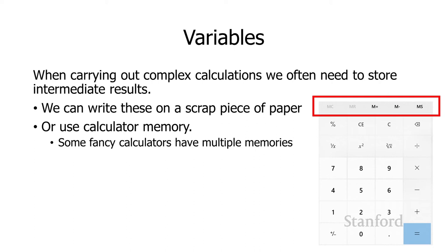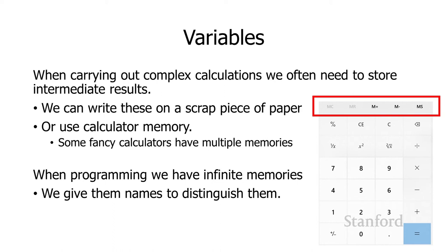In programming, when we're writing programs for the computer, we have an infinite number of memories. We don't want to have to deal with, did I store that in memory three? Did I store that in memory 72? So we're going to give our memory locations names to distinguish them. In computer science, these storage locations in a program are referred to as variables.